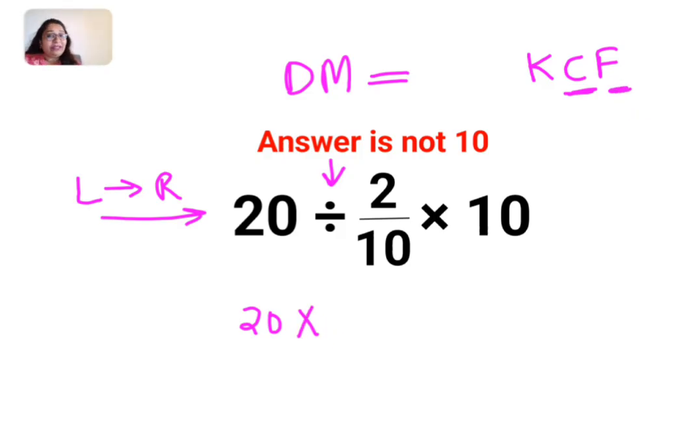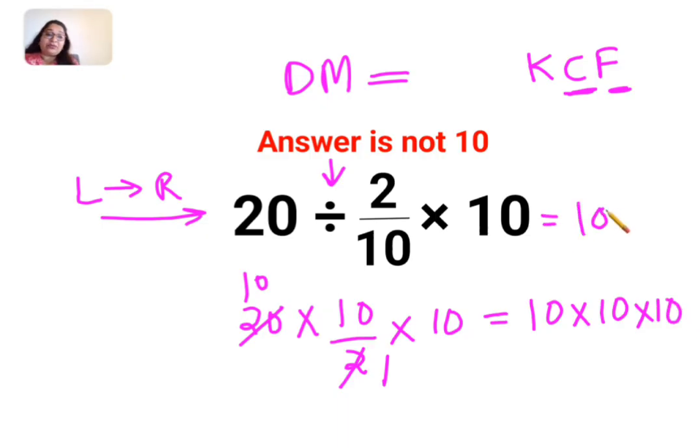And F stands for flipping or taking reciprocal of 2 upon 10 which is 10 by 2 multiplied by 10. So here what happens is this gets cancelled and this is 10. So basically this has now got reduced to 10 multiplied by 10 multiplied by 10. So answer for this question is supposed to be 1000.